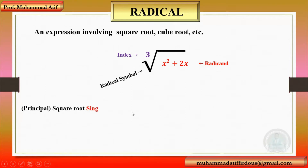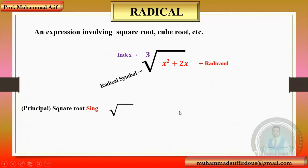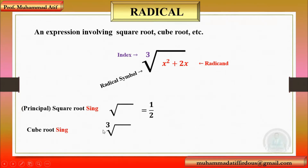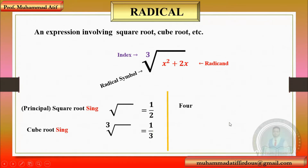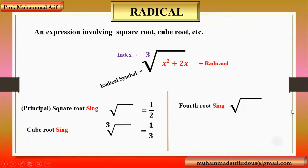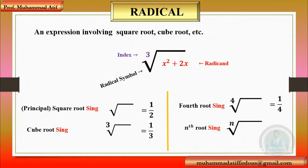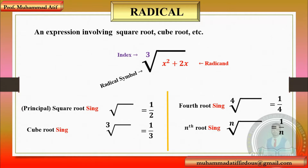Now, the square root sign is the principal square root sign and its value is equal to 1 over 2. The cube root sign is the radical sign having index 3, and its value must be equal to 1 over 3. Similarly, if we have a fourth root, then its index is 4 and its value is 1 over 4. And lastly, if we have an nth root, then its sign has index n and its value is 1 over n. So any expression involving square root, cube root, etc. is a radical.